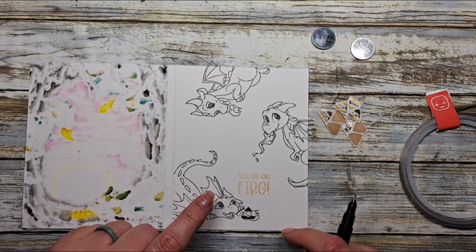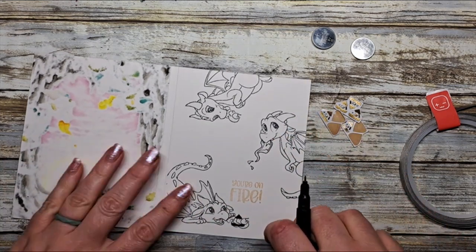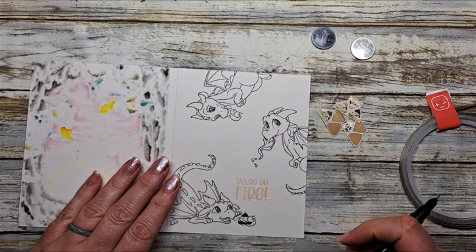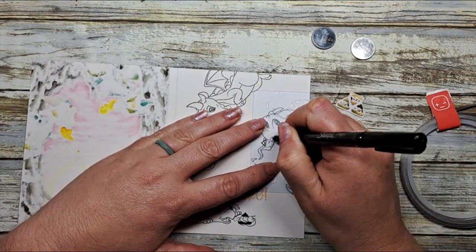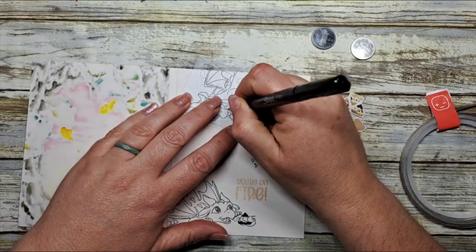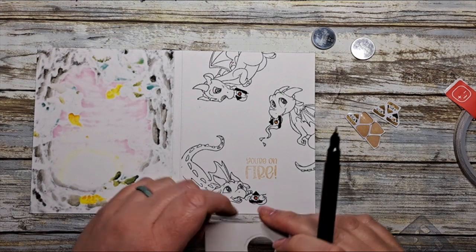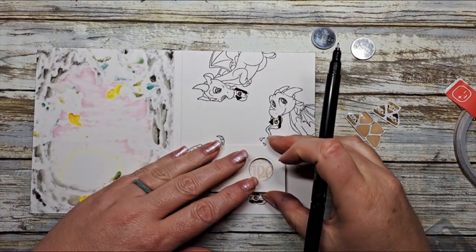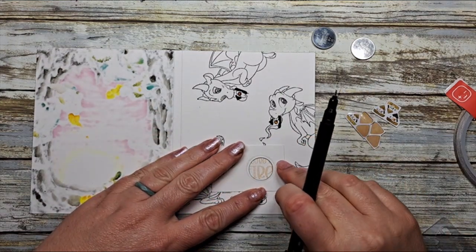You can also stamp your images a little bit lighter so they're not so distracting. Next we're going to plan out where our battery is.